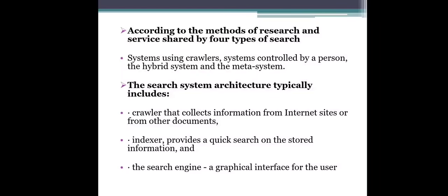According to the method of research and service, search systems are shared into four types: systems using crawlers, systems controlled by a person, hybrid systems, and meta-systems.